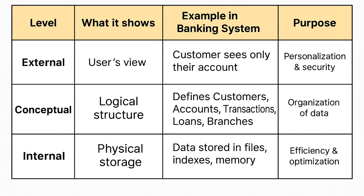Now let's see the difference between these three levels in a simple table. External Level shows the user's view — in a bank, a customer sees only their account. Its purpose is personalization and security. Conceptual Level shows the logical structure — in a bank, it defines customers, accounts, transactions, loans, and branches. Its purpose is organization of data. Internal Level shows the physical storage — in a bank, data is stored in files, indexes, and memory. Its purpose is efficiency and optimization.